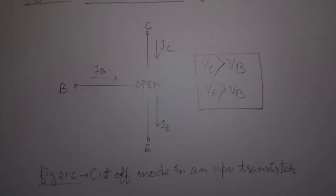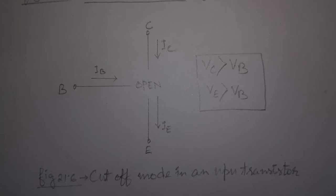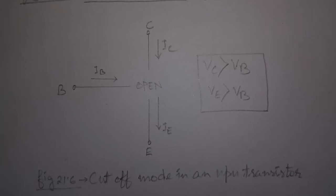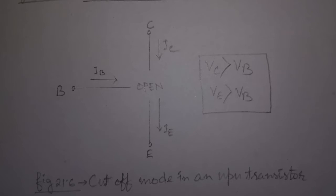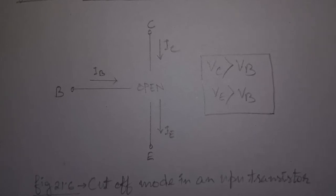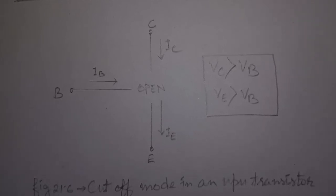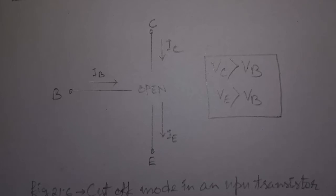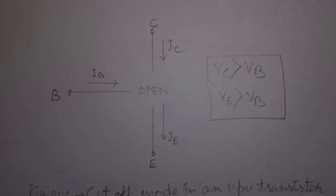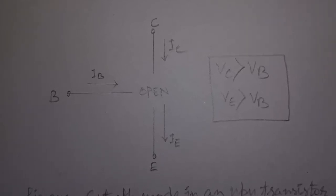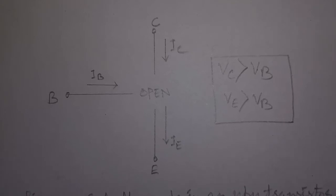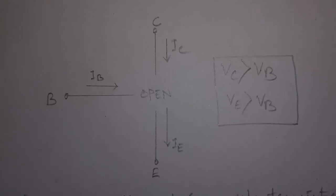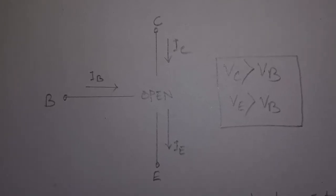Cut-off mode is the opposite of saturation. A transistor in cut-off mode is off. There is no collector current, and therefore no emitter current. It almost looks like an open circuit as shown in this figure. So, in the case of NPN transistor, the base potential must be less than both the emitter and collector voltage. Transistor's base emitter voltage must be greater than zero, and base collector voltage must be negative.